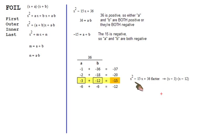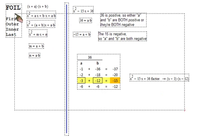So x squared minus 15x plus 36 factors into x minus 3 and x minus 12 because those are both your a and b. And that's how you factor quadratic trinomials.